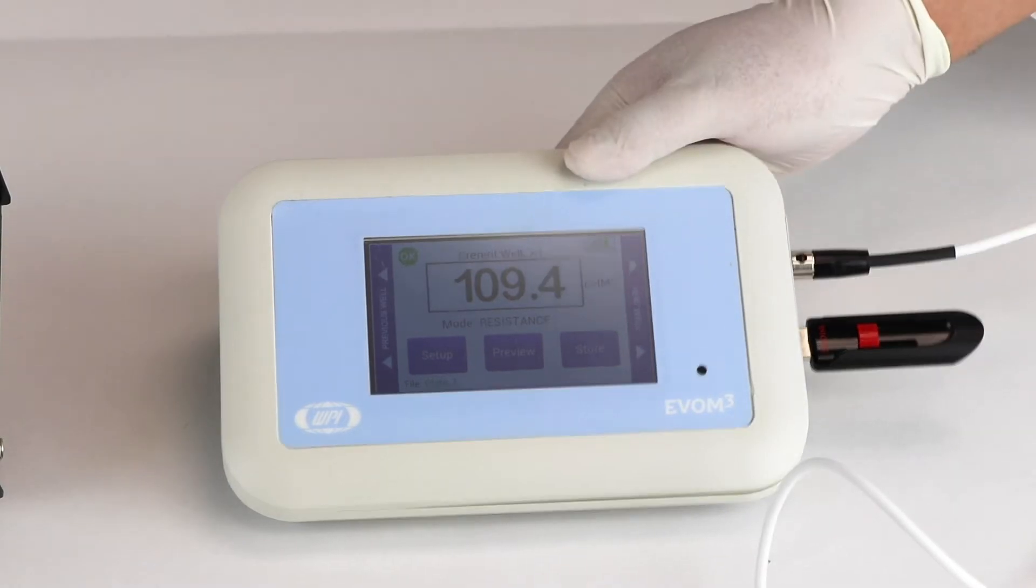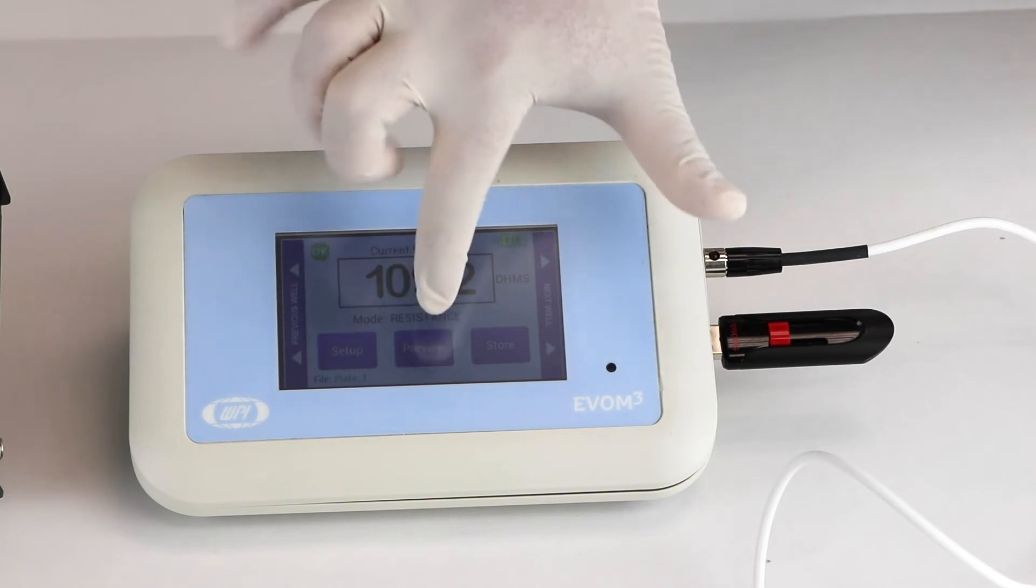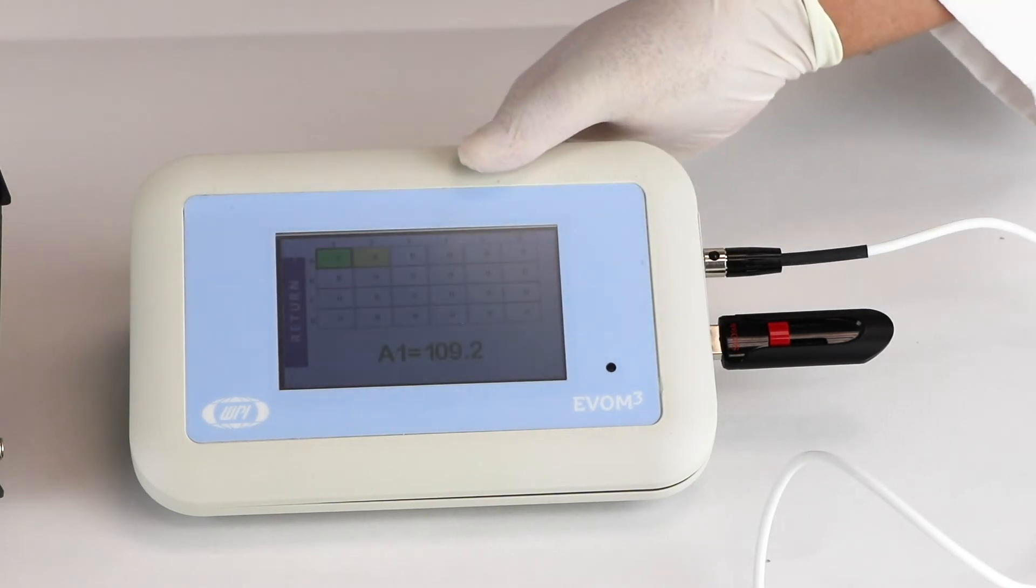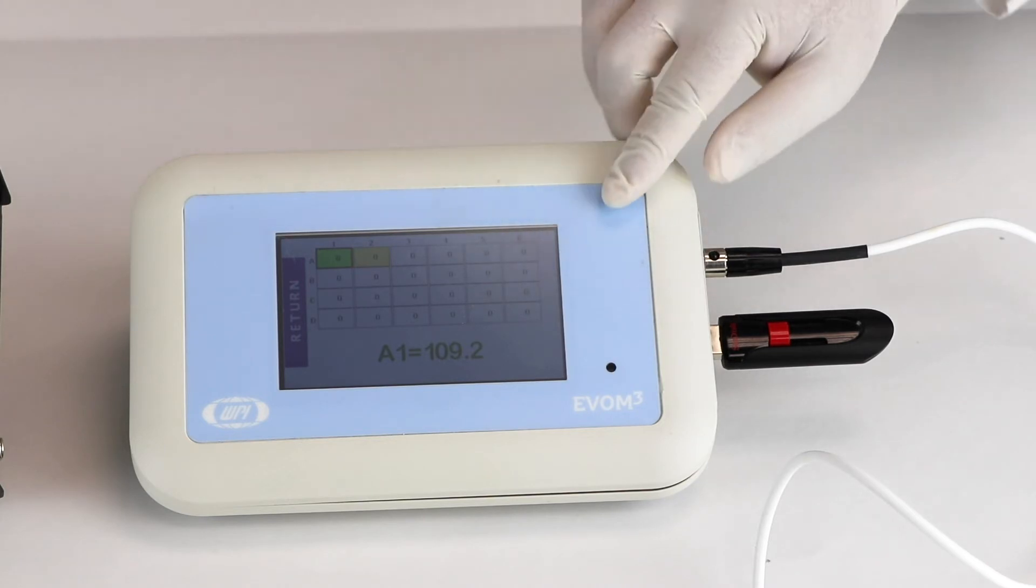On this side we have our new EVOM 3 which is a smart display and you have the option of displaying the data in different well plate format. This one right now shows in a 24 well file format and it can store the data on the USB drive.